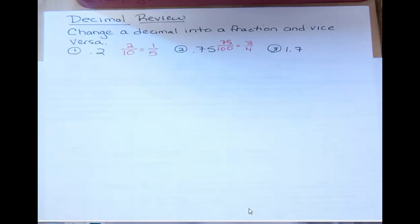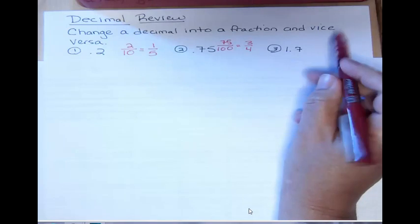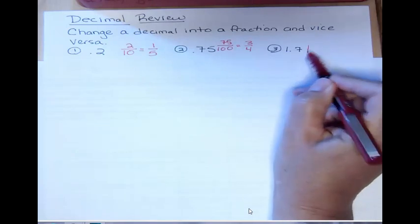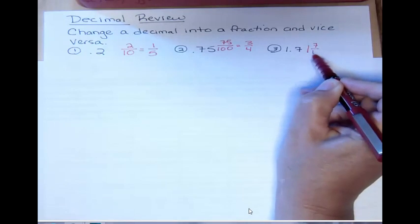1.7. Well, the reason I wanted to talk about 1 and 7 tenths is because it has a whole number part and it has a decimal part. The whole number part 1, it doesn't matter whether you're talking about a decimal or a fraction that follows it, that's still just 1. And then we have 7, and we have one decimal place, so 1 and 7 tenths.